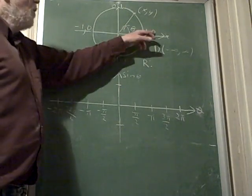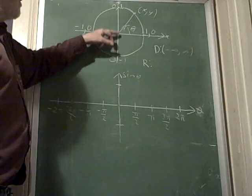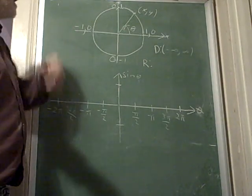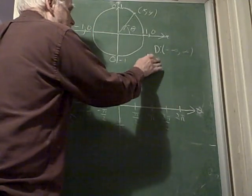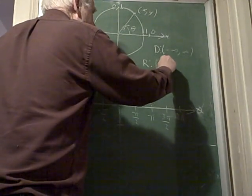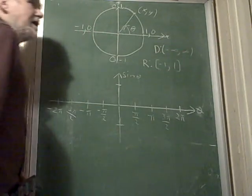Now my range, this is the y value on the unit circle. And I notice the y values only go from negative 1 to 1. That's it. So my range is negative 1, it includes negative 1 though, negative 1 and 1. Of course, with the infinities, they're always round brackets and never included.